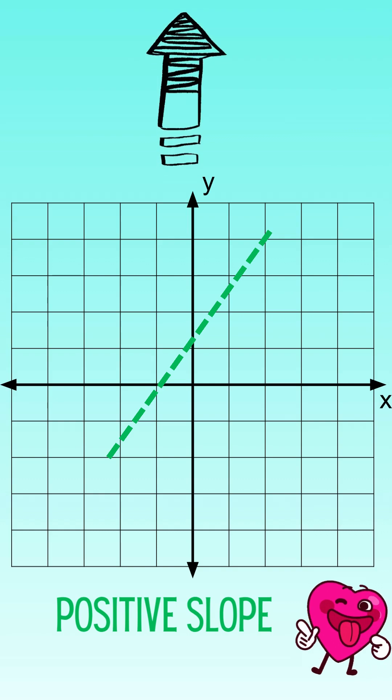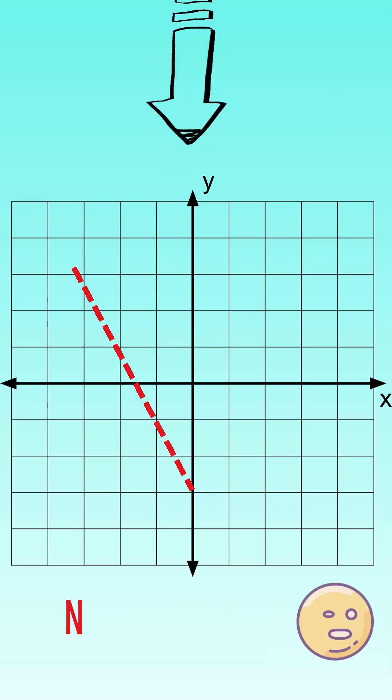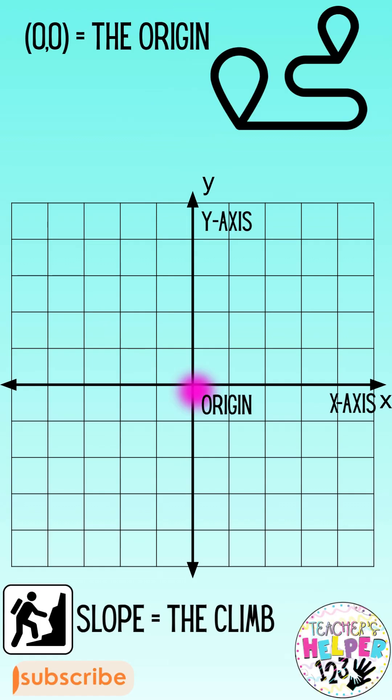A positive slope moves up and to the right, a negative slope moves down. Math isn't just numbers, it shows us how everything connects.